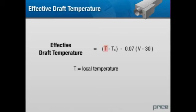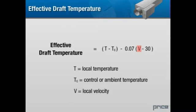The effective draft temperature can be calculated as follows. Where T equals the local temperature in degrees Fahrenheit, Tc equals the control or ambient temperature in degrees Fahrenheit, and V equals the local velocity in feet per minute.